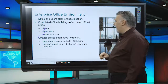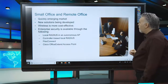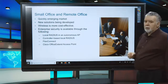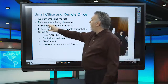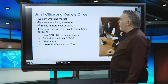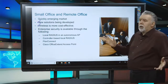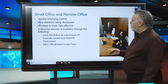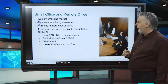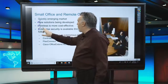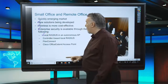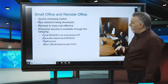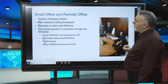The small office and remote office is a very quickly emerging market — anything from a restaurant or pub to an accountancy office with one or two APs. New solutions are being developed constantly for these markets, and Wi-Fi becomes very cost-effective. Security can be made simple using a local RADIUS server in an autonomous AP or in the wireless LAN controller itself. You can also use FlexConnect and Cisco Office Extend to extend the office to the home office or smaller office.